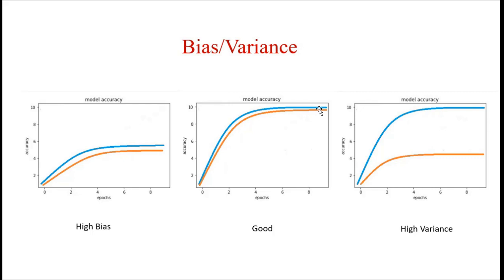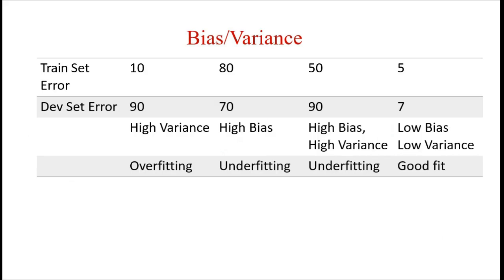In the middle graph we can see that accuracy for both training and testing is close to 100%. We achieved the same accuracy for training as well as testing, on the seen data and on the unseen data. So this is good fit, which the model should achieve, not high bias and high variance.